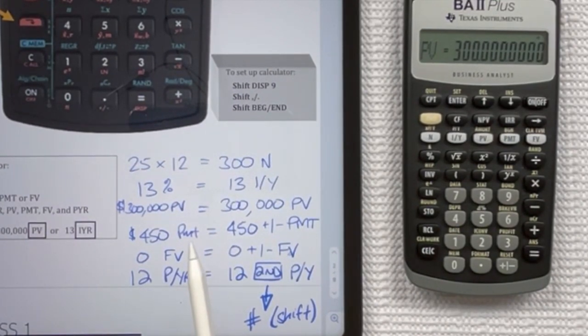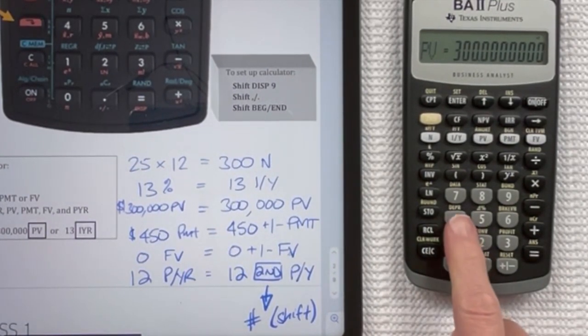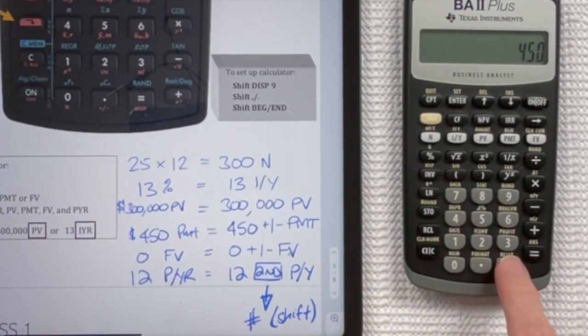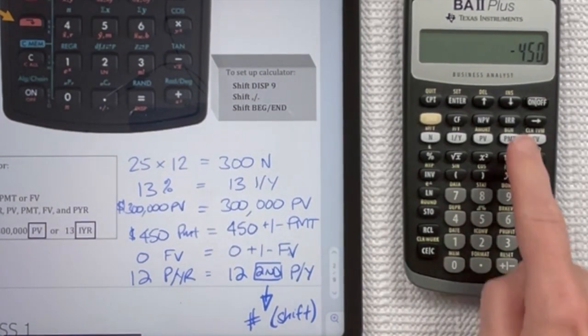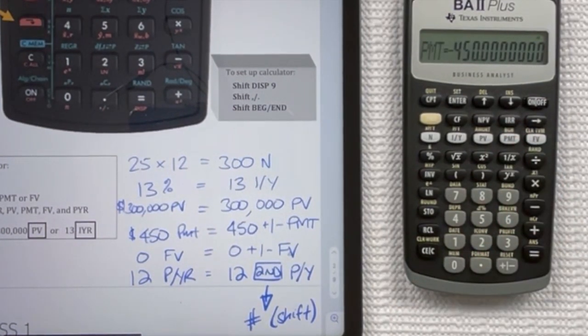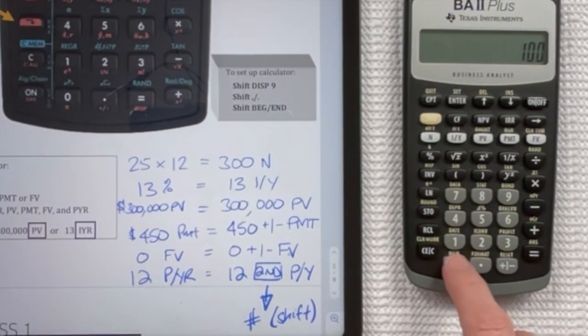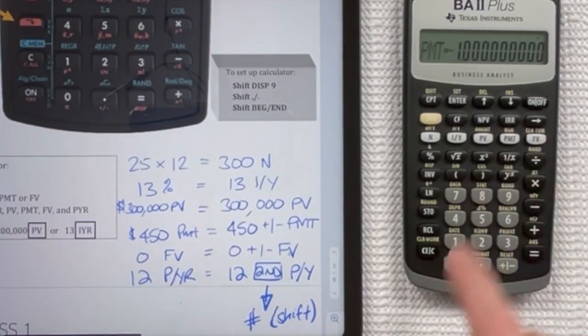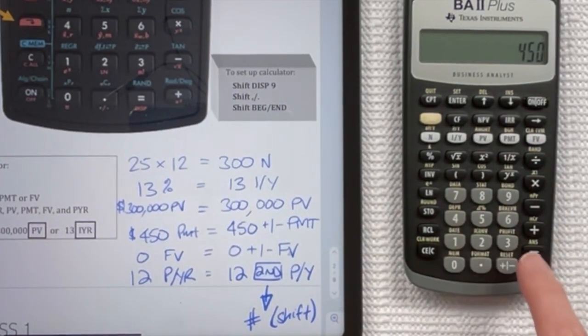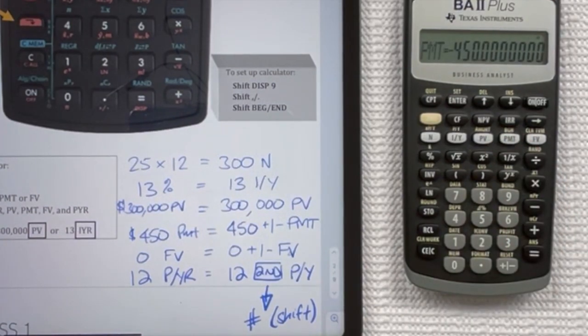If you were entering a payment, a $450 payment, you'd have to put a negative on that because it's a payment amount, and then press your payment key. So $500 payment, $500 plus minus PMT, $1,000 payment plus minus PMT, and we'll go back to the $450 plus minus PMT. Every time you enter a payment amount or you find it, it should be a negative in the calculator.